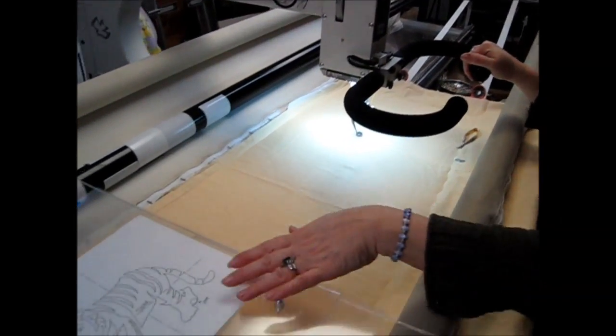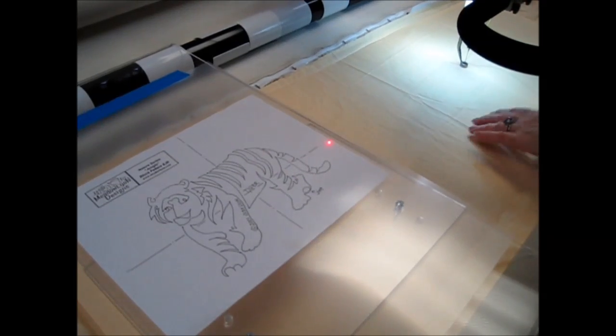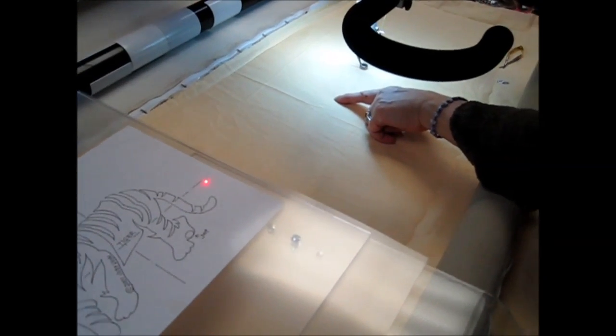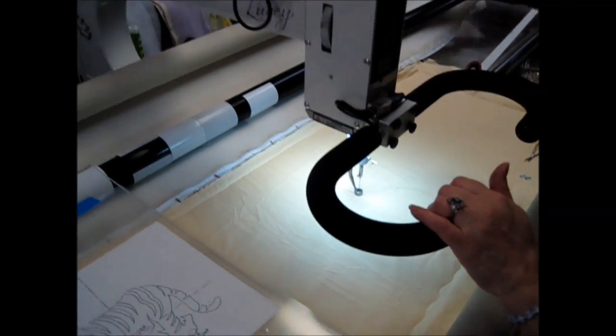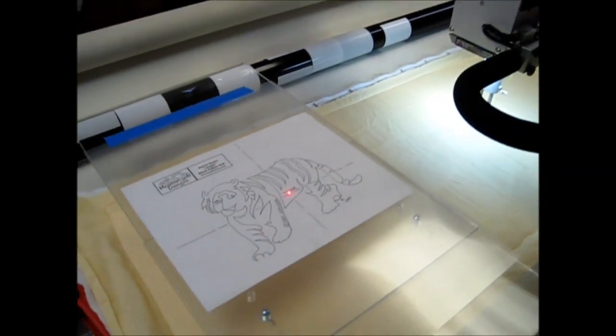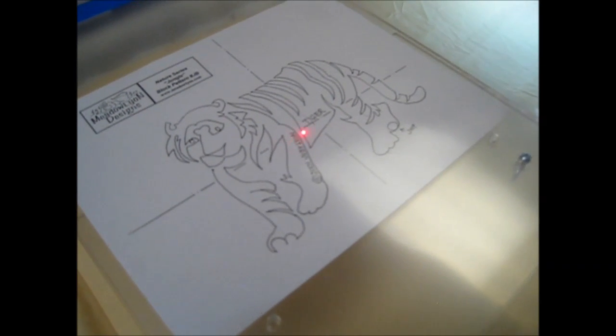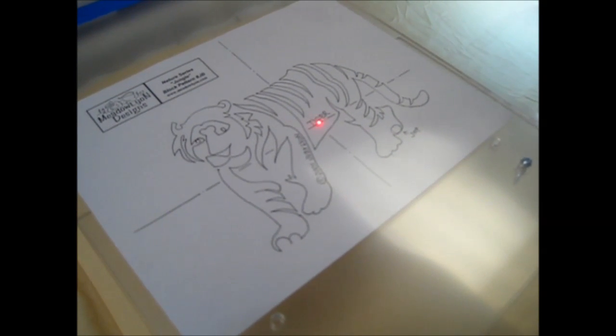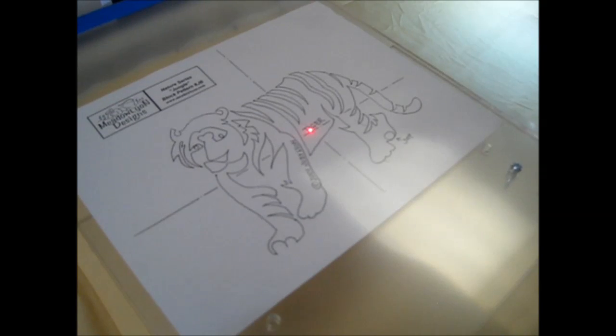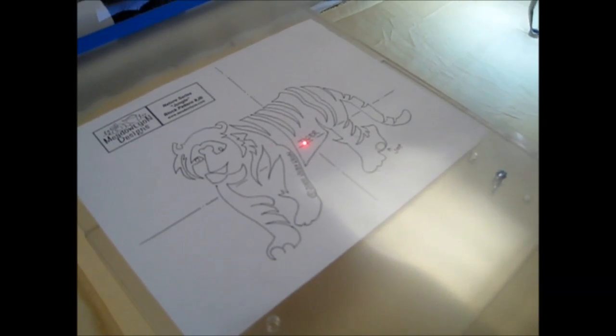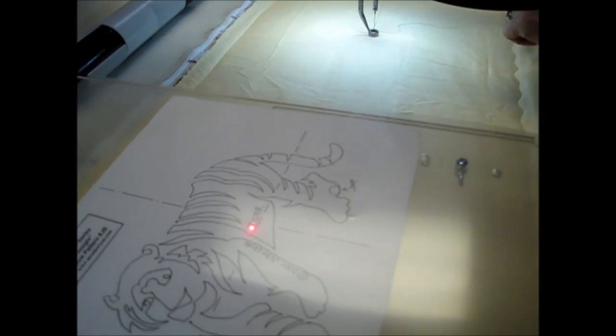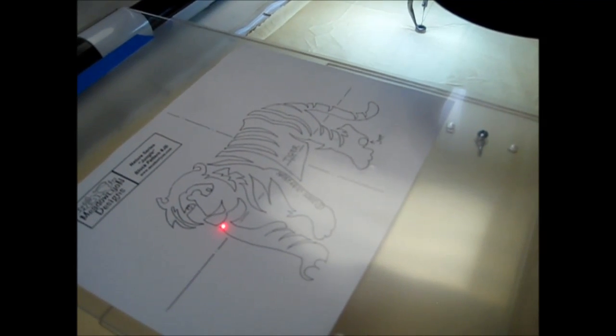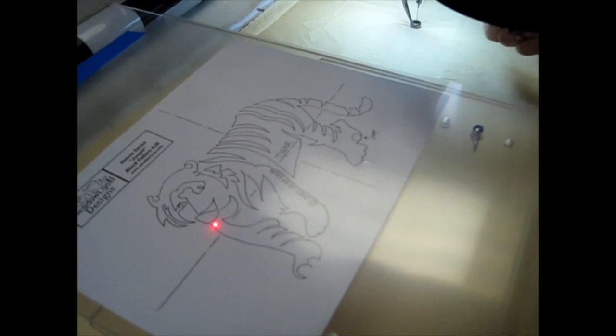So I want to place this tiger on my quilt. Let's pretend this is where I want to center it. So I would put my needle where I want to center and then I would move my laser light to the center of the pattern. This is a Meadowlion pattern and you can find their patterns online. So now we know that the tiger is centered to where I want it on the quilt. And I'm just going to move over to the start position. Needle up and down.